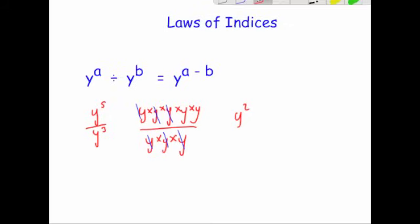Let's look at some examples. W to the power of 8 divided by w to the power of 2 — subtract the powers: 8 minus 2 is 6 — so the answer is w to the power of 6.